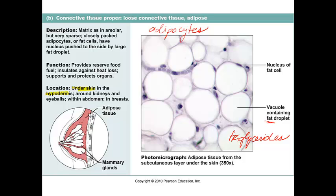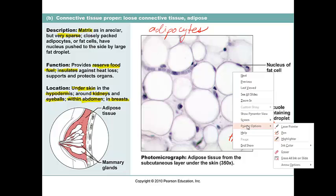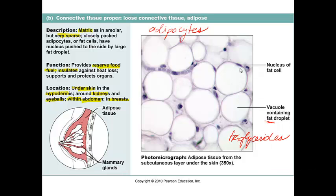Another name for the hypodermis is subcutaneous — so if a nurse gives a shot sub-Q, that's an abbreviation for the subcutaneous area. Adipose tissue is also found in the belly, surrounding organs like the kidneys, around the eyeballs, and in breast tissue. It provides a reserve fuel supply and is very important for insulation. The matrix is very sparse, and interestingly, the lipid droplet takes up so much of the adipocyte that the nucleus is pushed to the periphery, making the cell look almost perfectly circular or oval.